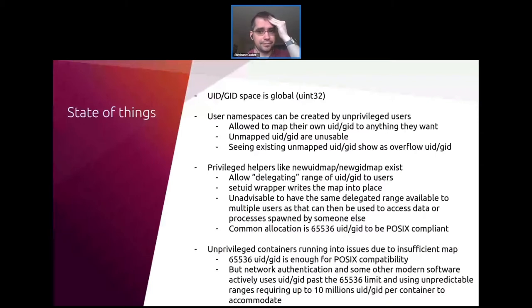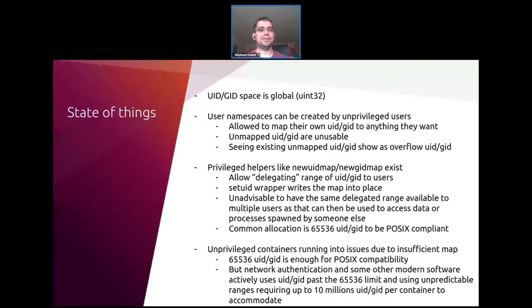Another difficulty is running multiple container managers on one system and mediating things so they use different ranges, or if they use the same range, at least in the same way with no weird issues. That's effectively the state of things: how user namespaces work, how current configuration works when you want to do more than a single UID and GID mapping, and how that can get problematic with other tools.